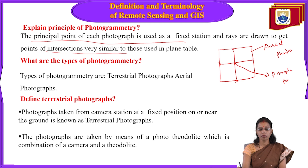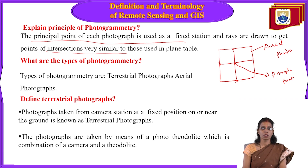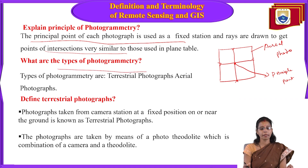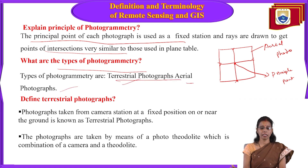The principal point is used for finding the exact fixation to the map or image. There are two types of photogrammetry: terrestrial and aerial. Aerial photography is information taken from the air using a helicopter or aeroplane, while terrestrial means ground-based.